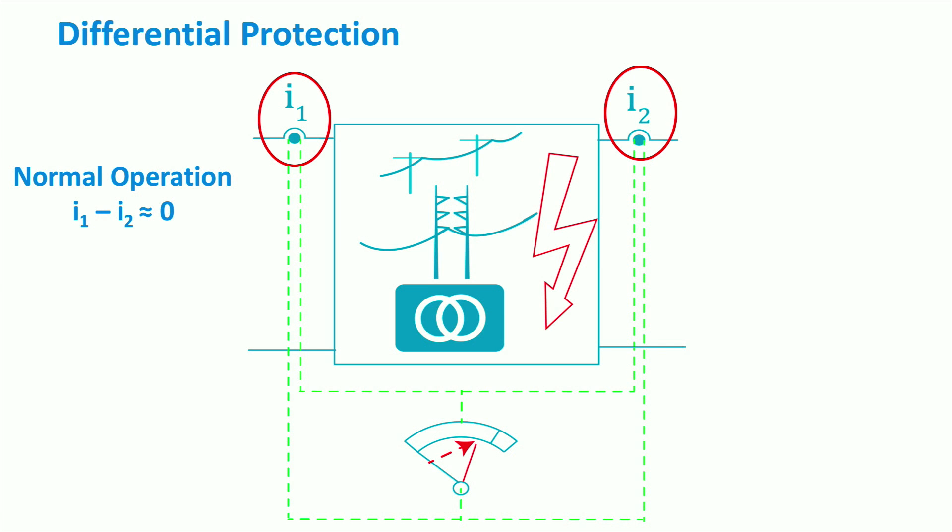When a fault occurs, however, the difference between the input and output currents is high and causes the relay in the equipment to trip and disconnect the equipment from the grid.